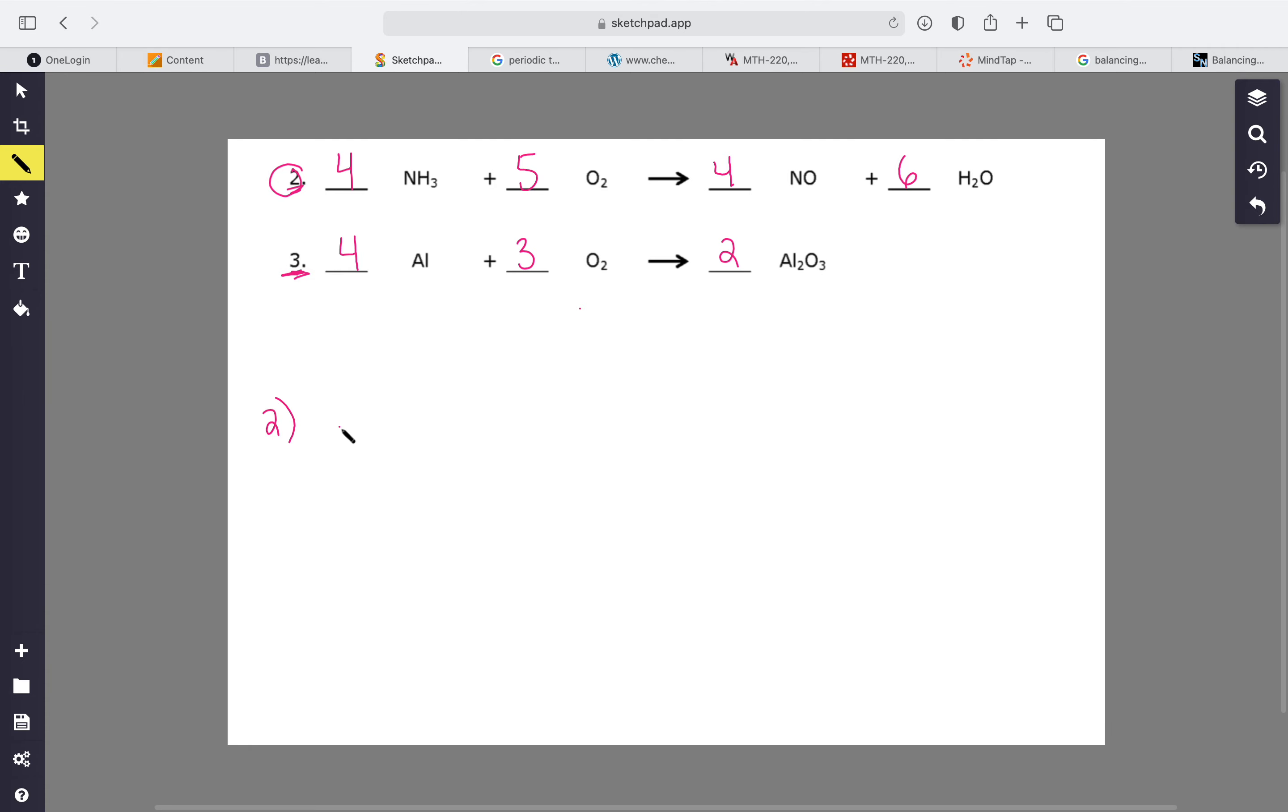So let's check ourselves. For number two we have the reactants and products, and we have nitrogen to worry about, we have hydrogen to worry about, and we have oxygen to worry about. We got three things - that's why this one's kind of difficult.